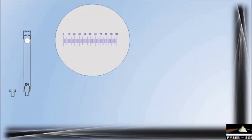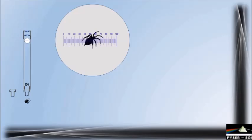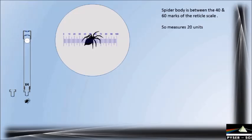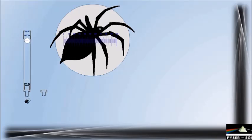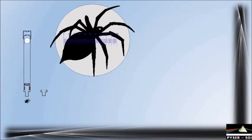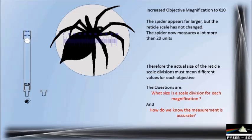Let's revert back to our x4 objective and introduce a scale reticule into the eyepiece. The body of the spider falls between the 40 and the 60 unit marks on the reticule scale, so the spider width is around 20 units. Now let's increase the magnification by replacing the x4 objective with the x10. As expected the spider appears much larger but the reticule scale remains the same. The spider has not really grown any larger, but if measured with this reticule scale it now appears to be much more than 20 units across. This shows that the reticule scale divisions must measure different amounts depending on which magnification is selected.